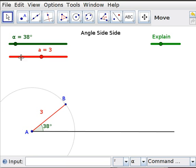To be 3 units away from A, it has to be somewhere on this circle. There's only one place on the circle where there's an angle of 38 degrees, and that is there.